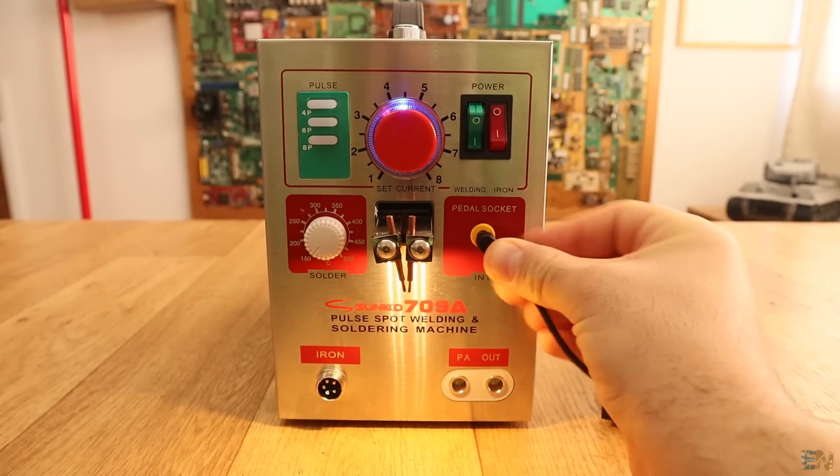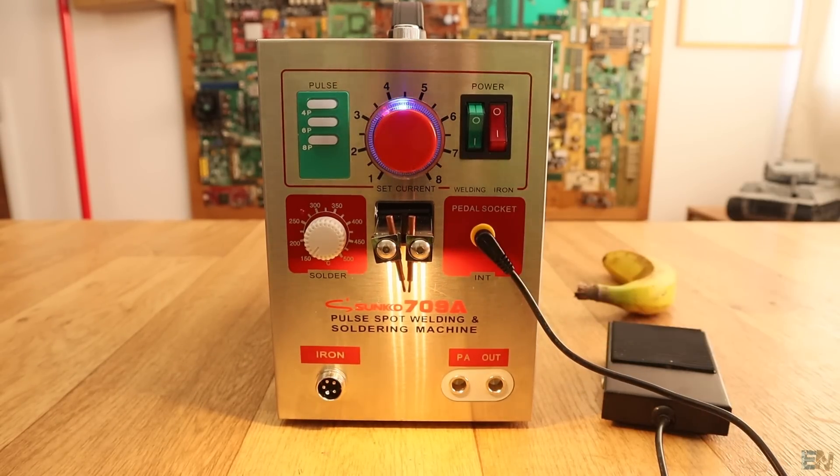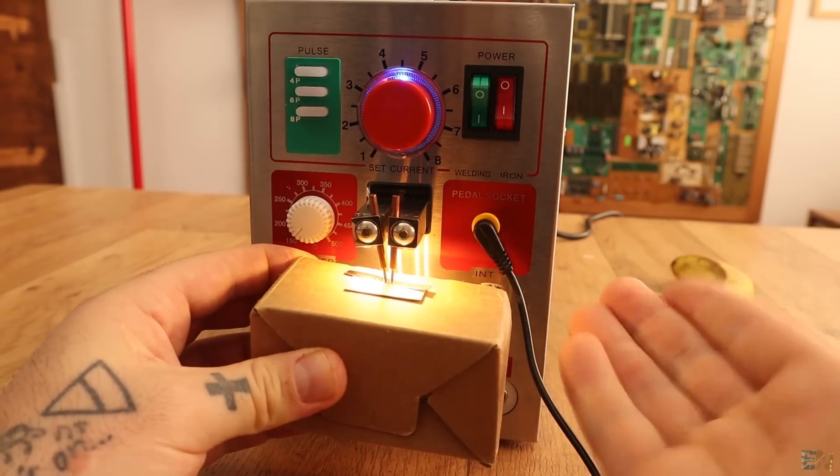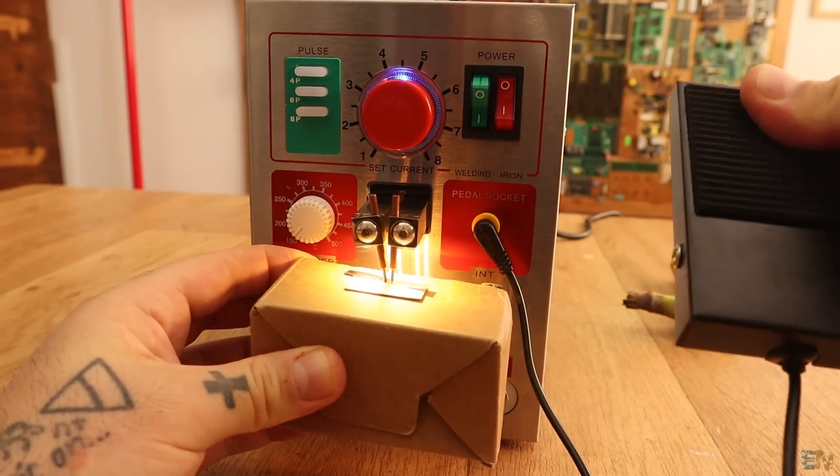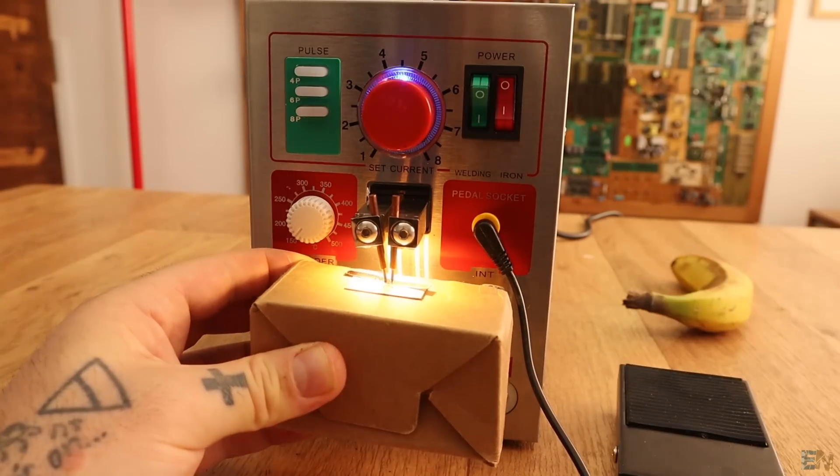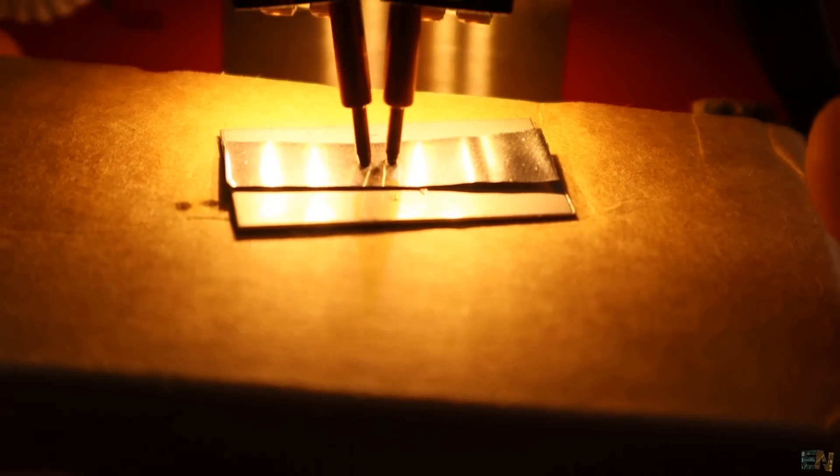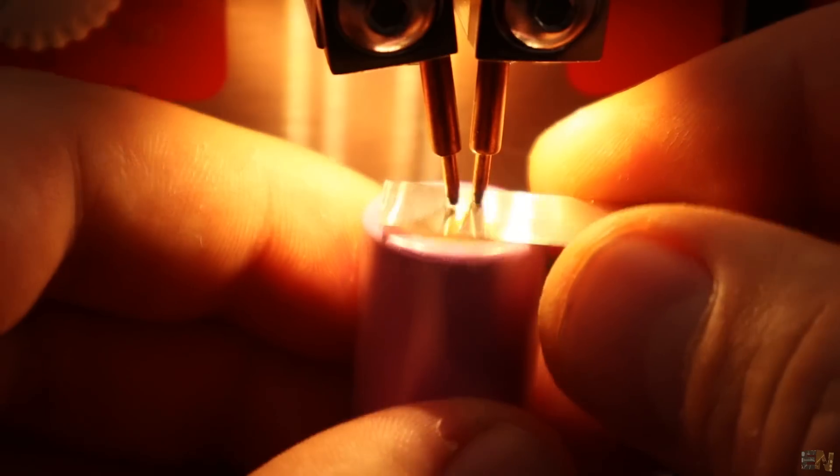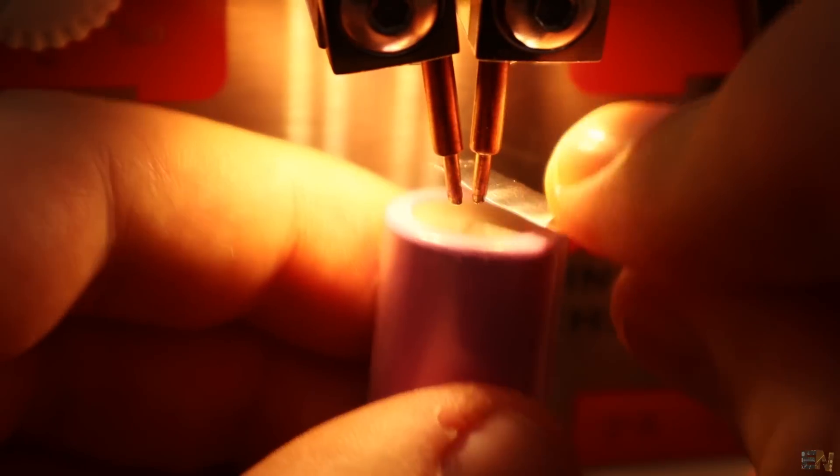So now I plug the foot pedal. If the foot pedal is connected, the internal switch won't work anymore. Now the switch is the pedal, so in this way you can make sure the position where you want to solder is ok and then press the pedal. By pushing the electrodes upwards, you could slide and make a wrong solder joint.